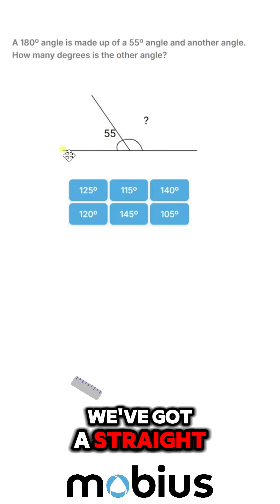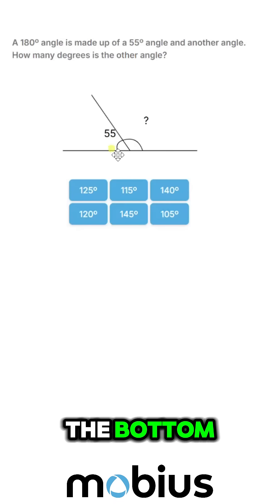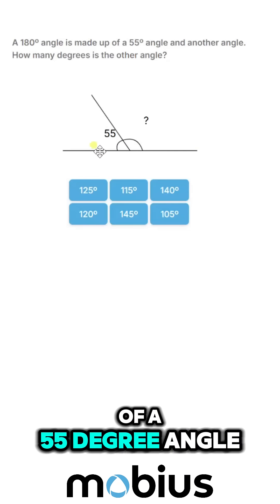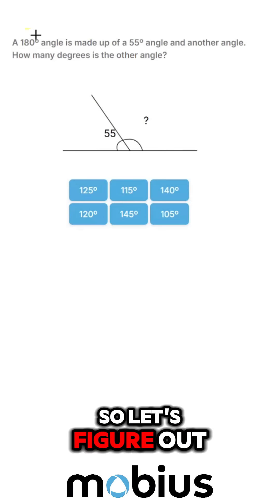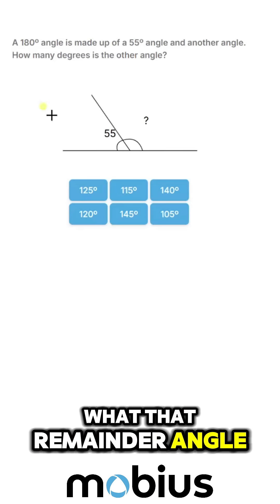We've got a straight line here going along the bottom and that's made up of a 55 degree angle and then this remainder angle. So let's figure out what that remainder angle is made up of.